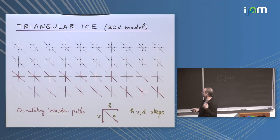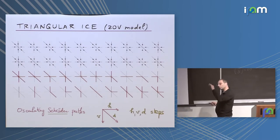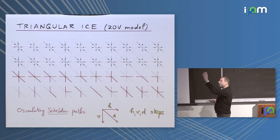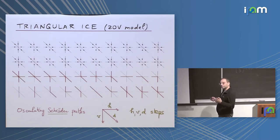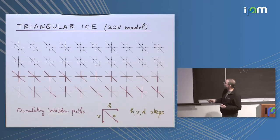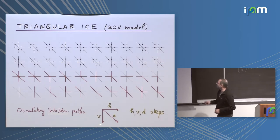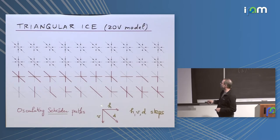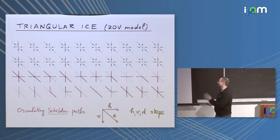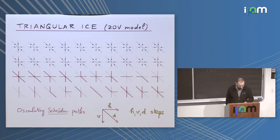In pretty much the same way as for the six-vertex, you have an oscillating path formulation. My paths are also going to go from the northwest to the southeast. The new feature in this model compared to the six-vertex is really this: there are still kissing points or oscillating points between the paths, but you can have a triple kissing — it's a very French system. So here you have oscillating Schröder paths. Schröder just means that instead of having just two types of steps — horizontal and vertical — you also have diagonal steps. It's called Schröder and not Motzkin because the length of a diagonal is not the same.